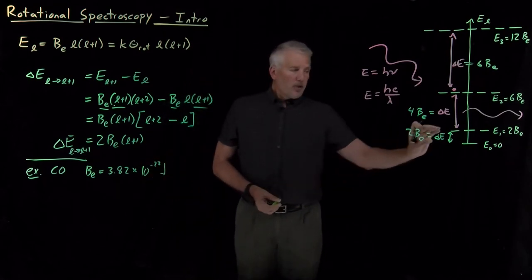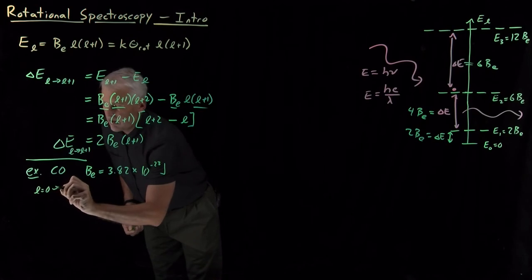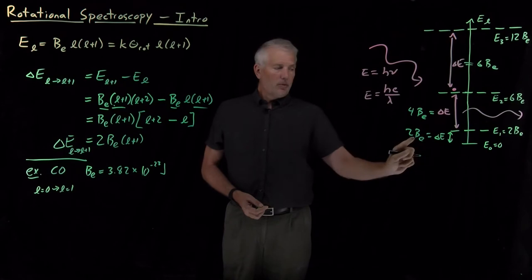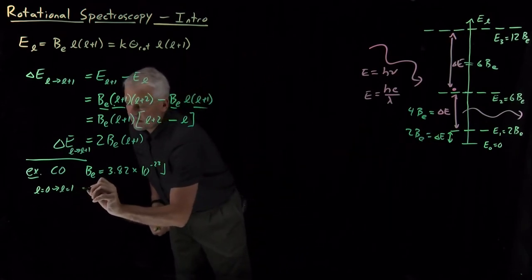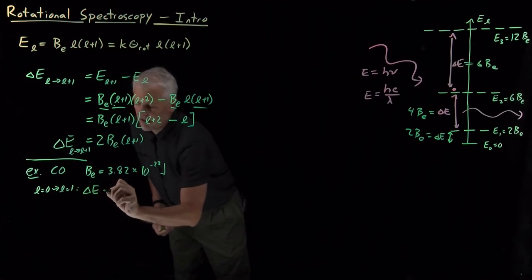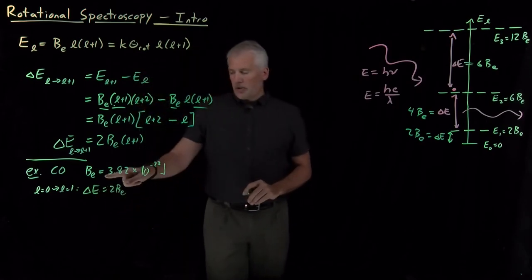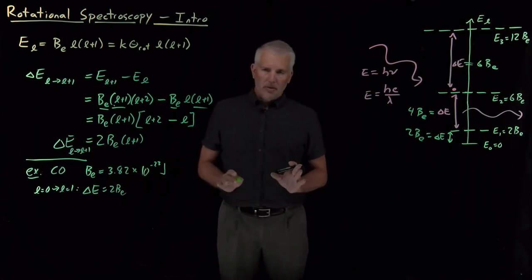So we could now calculate for the L equals zero to the L equals one transition, this gap between the levels, so that delta E is going to be twice the rotational constant, which would be twice this number, 7.6 times 10 to the minus 23 joules.